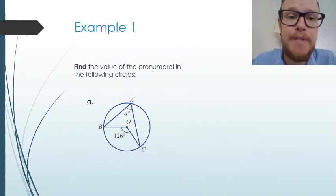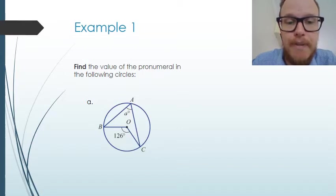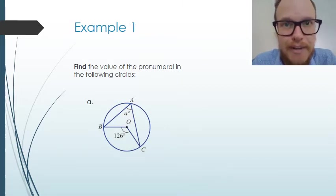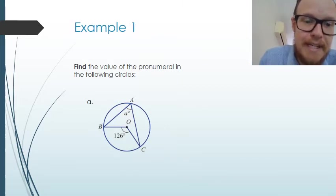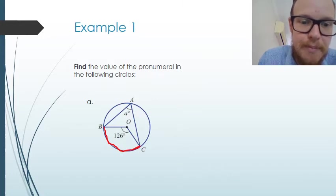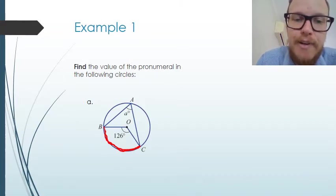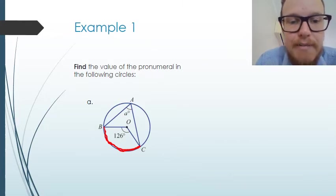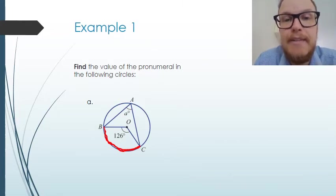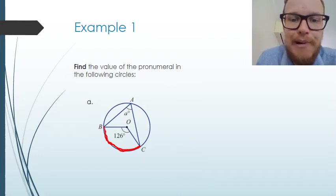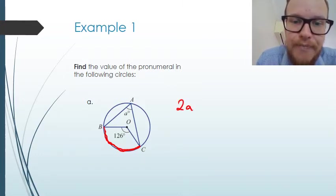Let's look at some examples — finding the value of a pronumeral in these circles. In the first circle we have two angles both subtended by the same arc BC. We have angle BOC at the centre and angle BAC at the edge. So we know that 2A equals 126.